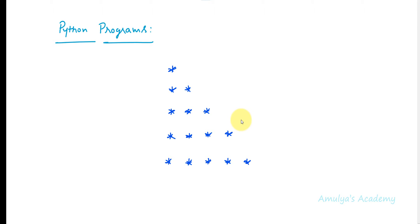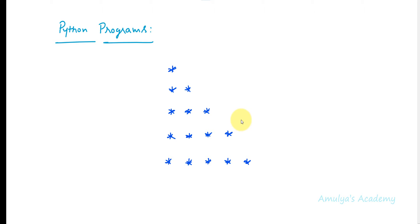I know we already did many videos on this topic. In fact, our channel is famous for pattern programs, and I think I already did 3 to 4 videos on this particular pattern. Then what is challenging in this? We can write this program in a minute, right? We can print the pattern using a for loop or a while loop, using a single loop or nested loop.